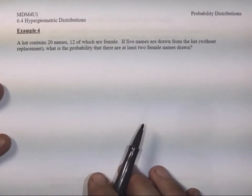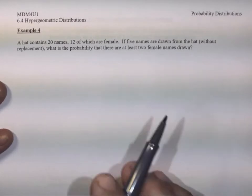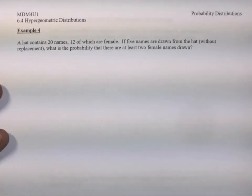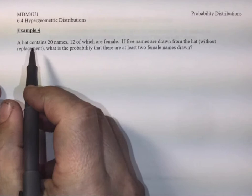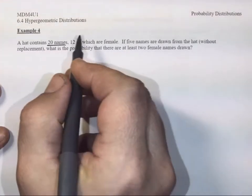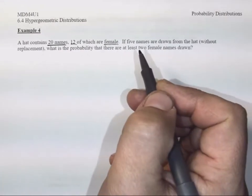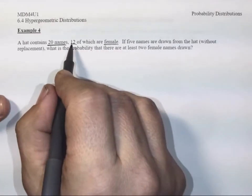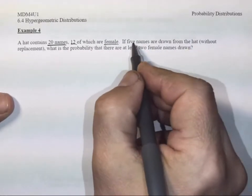Okay, here's our last example for hypergeometric distributions, Example 4. In Example 4, we have a hat that contains 20 names, and of those 20 names, 12 are female. Well, that tells me that 8 must be male.